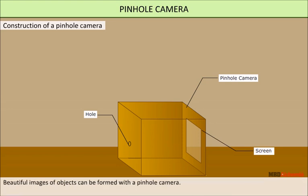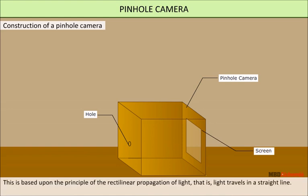Beautiful images of objects can be formed with a pinhole camera. This is based upon the principle of the rectilinear propagation of light — that is, light travels in a straight line.